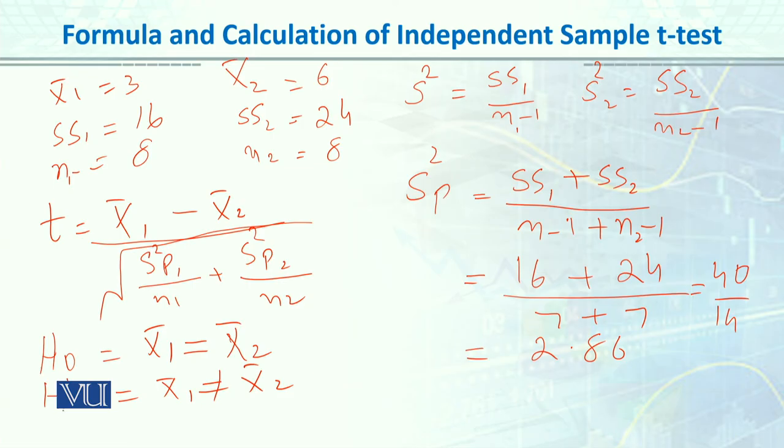After that, we need to find the t critical value from the table, just like you look up z-values. For independent sample t-test, go to the table at the back of the book, look at degrees of freedom which is 8 plus 8 minus 2, so 14. At 14 degrees of freedom and alpha 0.05, the t value equals plus or minus 2.145. Plus minus means that because we have not equal to, it can lie on either tail.